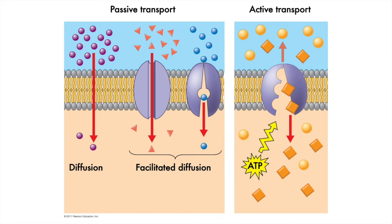Last question first: why exert energy on this? Because simple and facilitated diffusion won't do this job. As you can see, these types of transport only work with their concentration gradients. The tea leaves the bag but it doesn't return.